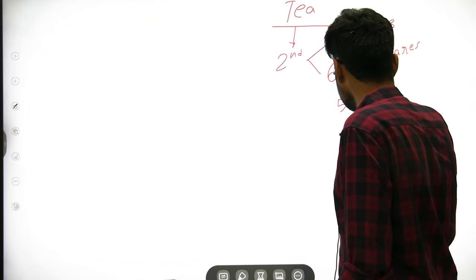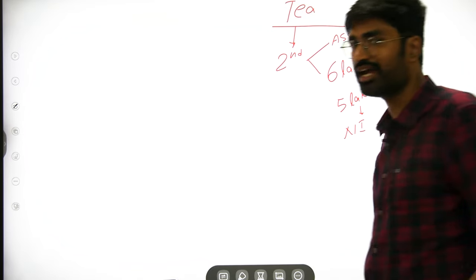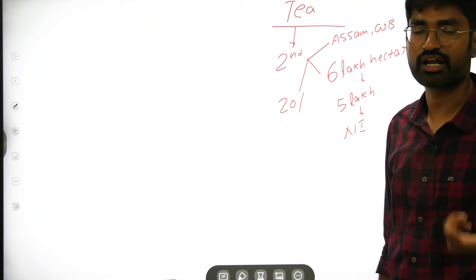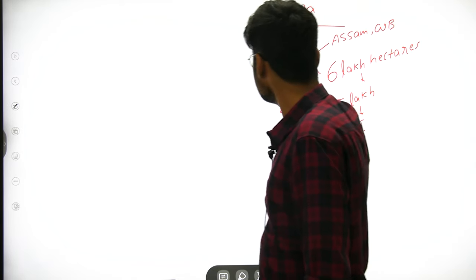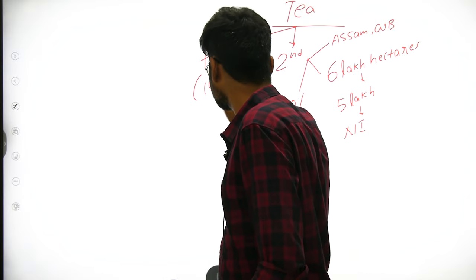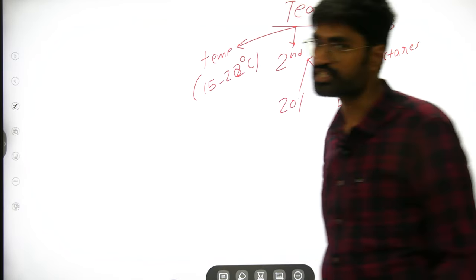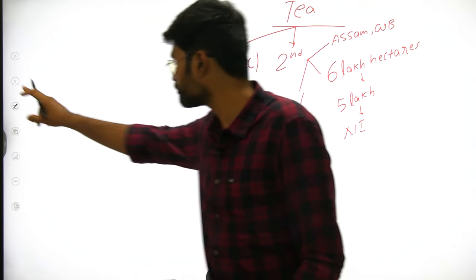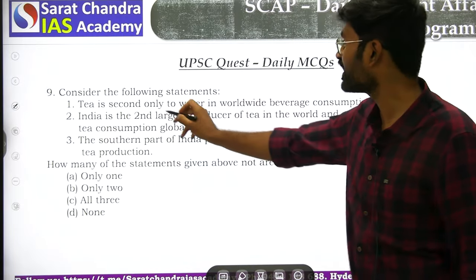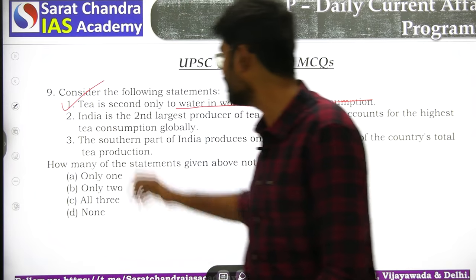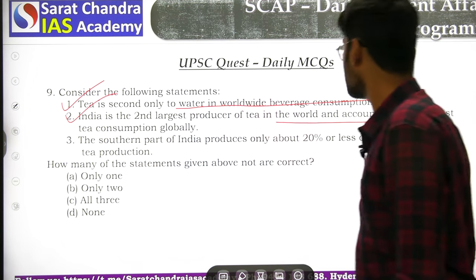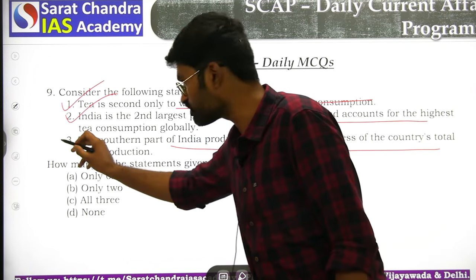India has around 6 lakh hectares under tea cultivation, with about 5 lakh hectares in North India. South Indian states like Kerala, Karnataka, and Tamil Nadu account for only 20% of production. Tea requires temperatures of 15 to 22 degrees Celsius. Tea is second only to water as the most widely consumed beverage worldwide. India is the second largest producer of tea and about 80% of production is consumed domestically. All statements are correct — none are incorrect.